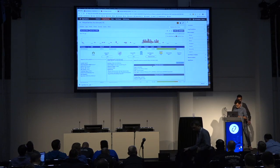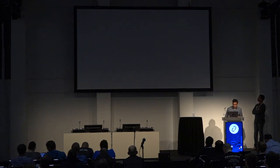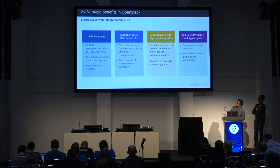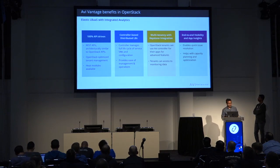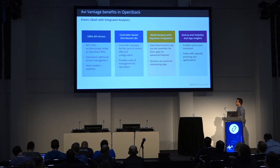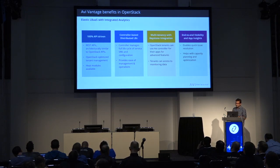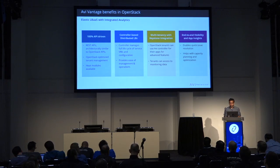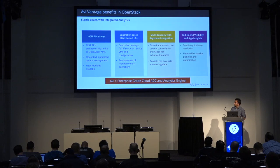Thank you, Anand. To summarize: our Avi solution with the service engine VM architecture does elastic LBaaS with integrated analytics, is 100% API driven, built as an SDN architecture with control plane and data plane that elastically scales, and has multi-tenancy with Keystone integration and very deep visibility and app insights built in. It's an enterprise-grade ADC analytics engine for your cloud, whether on-prem, AWS, Azure, or whichever cloud you're working on.